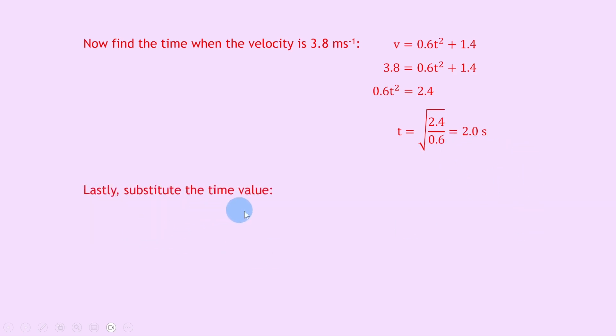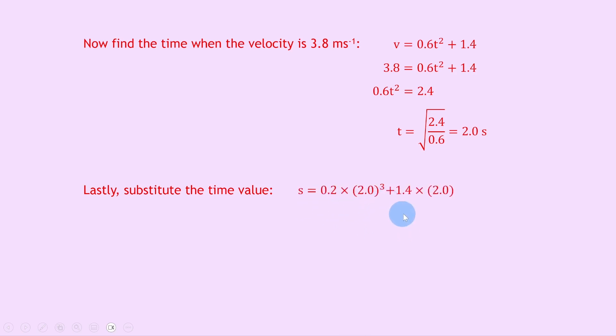Lastly, we substitute t equals 2.0 seconds into our expression for s: s equals 0.2 times 2.0 cubed plus 1.4 times 2.0. Putting that into the calculator gives an answer of 4.4 metres.